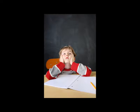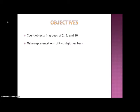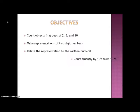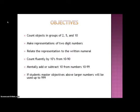Gone are the days of exclusive direct instruction where students are merely passive recipients of boring lectures. At the end of this unit, students will be able to count objects in groups of 2's, 5's, and 10's, later working mainly with groups of 10's. They will be able to make representations of two-digit numbers and relate the representation to the written numeral. They'll also be able to count fluently by 10's from any number from 10 through 90, and mentally add or subtract 10 from any number 10 through 99.